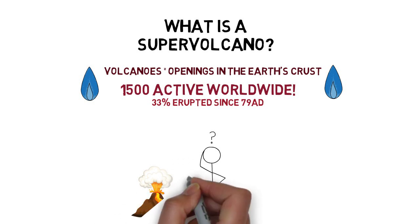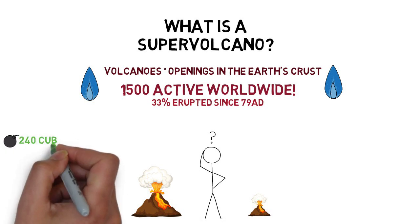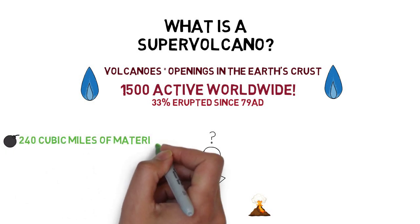Believe it or not, supervolcanoes work on the same principles as standard volcanoes. However, for a volcano to be classed as a supervolcano, it must have had an eruption in the past which released around 240 cubic miles of material.